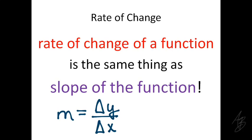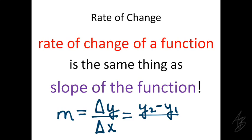This is a notation we'll use a lot in this class — delta representing change — so change in y would be the difference in the y values. That translates to the slope formula, which we recognize. Typically we'll write the formula in a slightly simpler form that translates a little bit better into the calculus that we'll be doing later on.